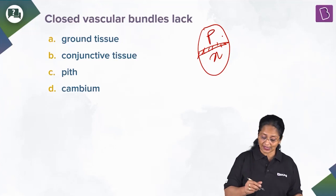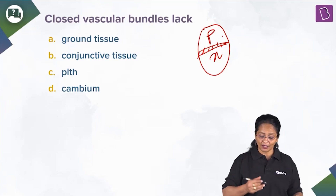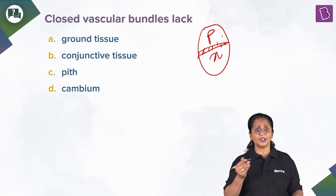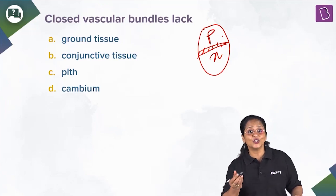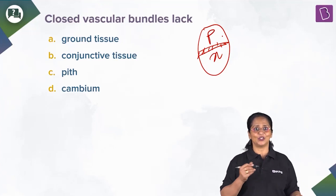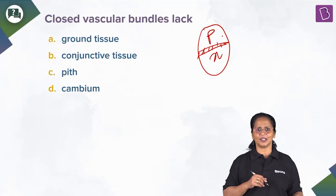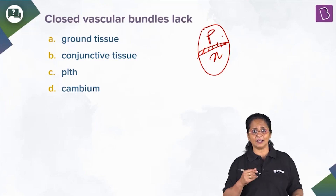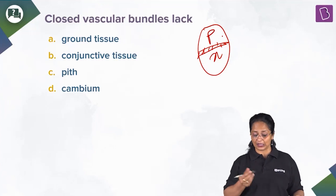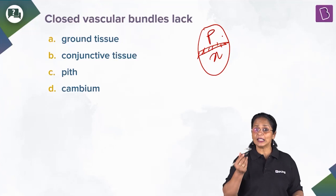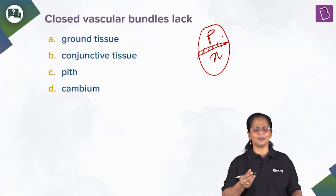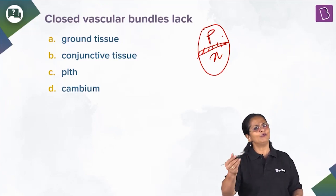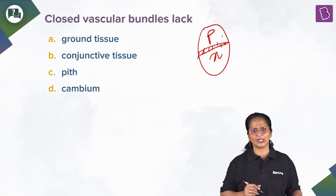In the dicot stem, xylem and phloem are arranged in the same radius — this is called a conjoint collateral vascular bundle. Conjoint means xylem and phloem are in the same radius. Collateral means xylem faces towards the pith and phloem faces outside.